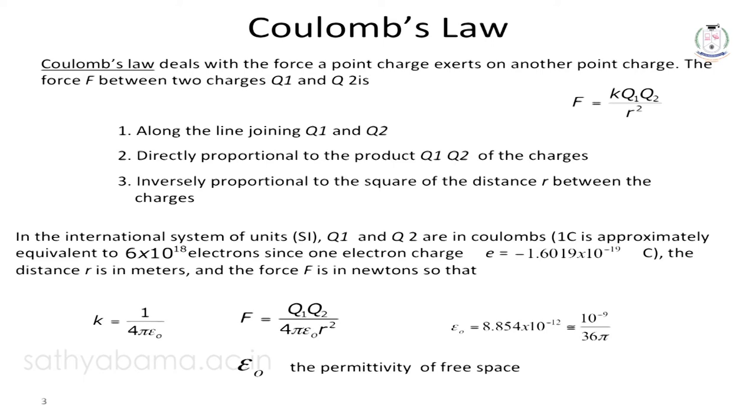While studying electromagnetics, scalar and vector terms will appear frequently. Scalar means a quantity that has only magnitude. Vector means a quantity that has both magnitude and direction. The force in Coulomb's law is a vector quantity. Examples of scalar quantities are voltage, current, pressure, and temperature. Examples of vector quantities are force, electric field intensity, magnetic field intensity, and electric flux density.